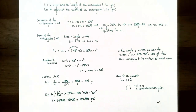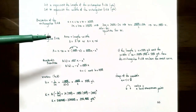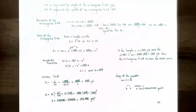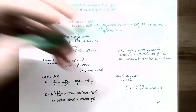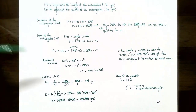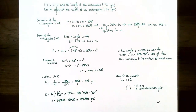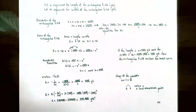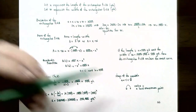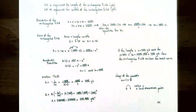The problem asked for the dimensions. We found the length is 500 yards. Using w = 1000 - x = 1000 - 500 = 500 yards. So the length is 500 yards and the width is 500 yards. This gives the most area because a = -1 is negative, so the parabola opens down and the vertex is a local maximum point. The area is maximum when x = 500 yards and w = 500 yards.